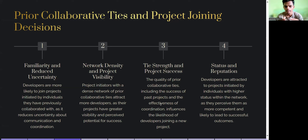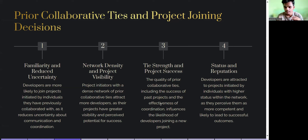Projects with dense networks of prior collaborative ties attract more developers as they have greater visibility and perceived potential for success. Tie strength and project success: the quality of prior collaborative ties, including the success of past projects and effectiveness of coordination, influences the likelihood of developers joining. Status and reputation: developers gravitate to projects initiated by individuals with higher status in the network, as they are perceived as more competent and likely to lead to successful outcomes.